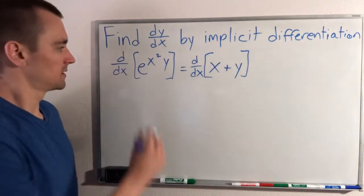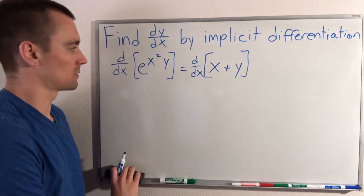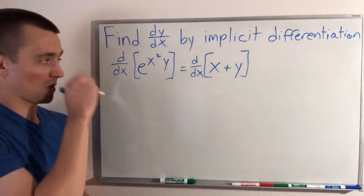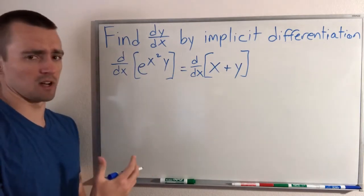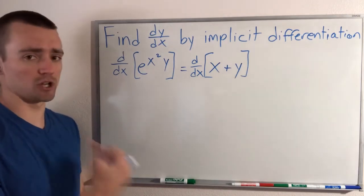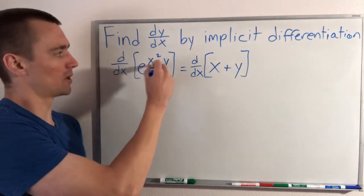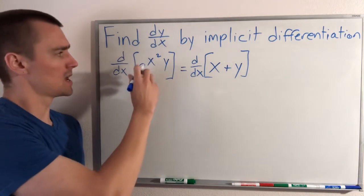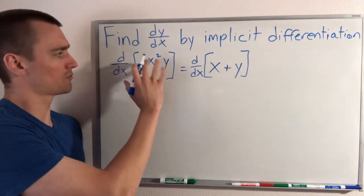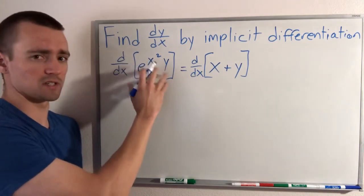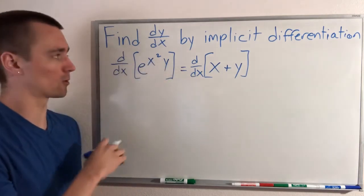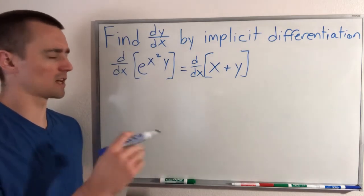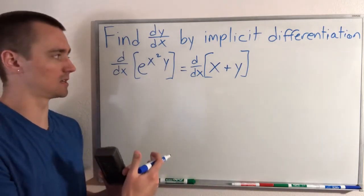The left side is going to be somewhat complicated because we have a couple of things we're going to have to do. First of all, we have to do chain rule because we have a bunch of stuff stuck within this exponent here. And then to find the derivative of just the stuff within the power, we're going to have to do product rule. So let's work our way from the outside in.